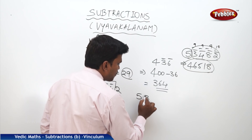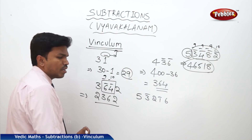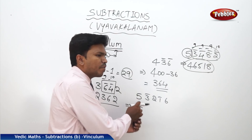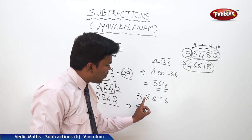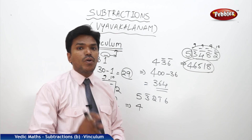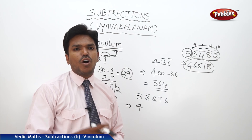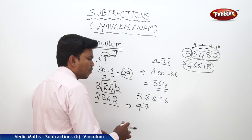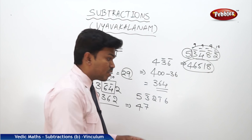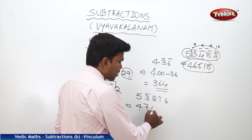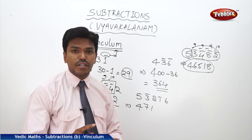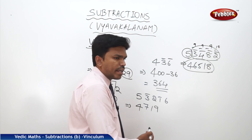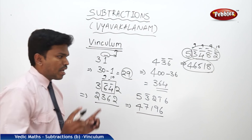One more example: 5, 3 bar, 2, 1 bar, 6. I want to convert this. 5 becomes 4 because its next number has a bar. There is only one digit with a bar — so apply the complement: 10's complement of 3 is 7. Then 2 must be reduced by 1 to become 1, because the next digit has a vinculum. Again, only one bar digit, so complement: 10's complement of 1 is 9. And 6 drops as it is. Answer: 4, 7, 1, 9, 6.